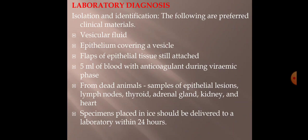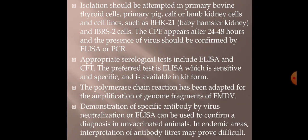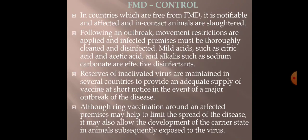For lab diagnosis, samples of choice include vesicular fluid, epithelium, blood, and from dead animals — epithelial lesions, lymph nodes, and thyroids. All viral specimens should be placed on ice and delivered to the lab within 24 hours. You can cultivate the virus on lab animals and on cell lines like lamb kidney cells and BHK-21 (baby hamster kidney) for isolation. ELISA or PCR can confirm virus presence — ELISA is the gold standard test for FMD virus.